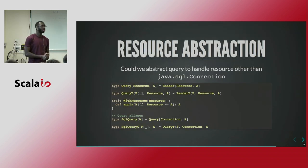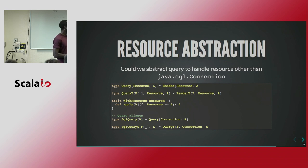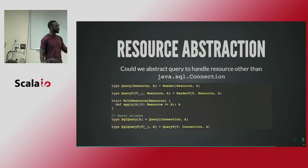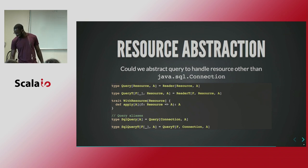With that Query type, we can express operations on relational databases with a Java SQL connection. But if you want to use it with MongoDB or Elasticsearch, you just have to extract the type of the context and set it to a resource type. We can define a type alias for SQL for convenience.